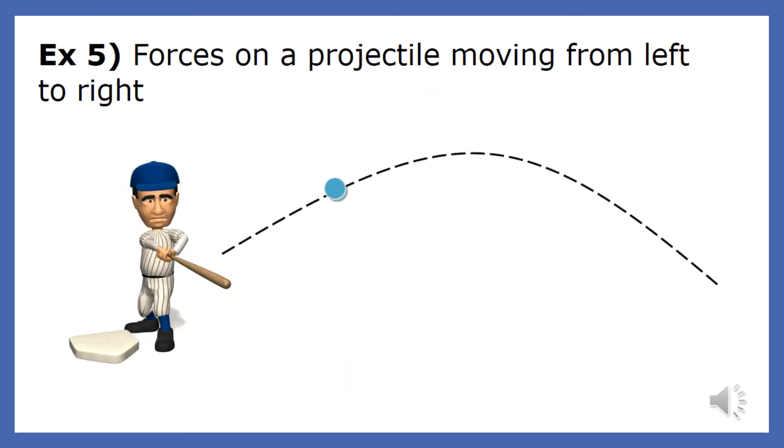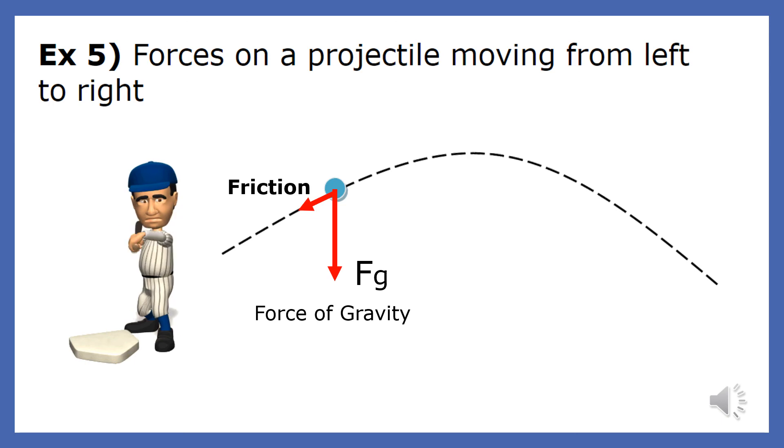Now we're going to do a free body diagram for a baseball after it leaves a bat. Of course, there's a weight force that points straight down. And since the ball is moving very fast, there's a significant friction force on it. The friction force is drawn in a direction that's exactly opposite to the ball's motion.